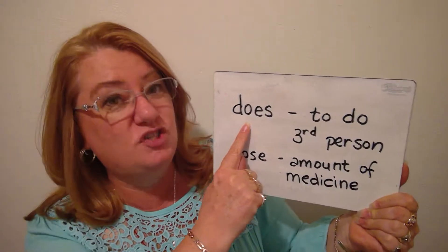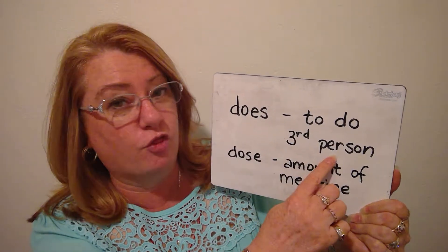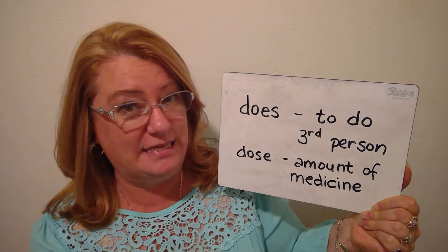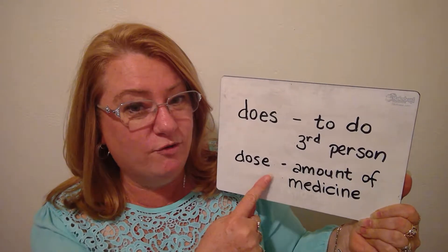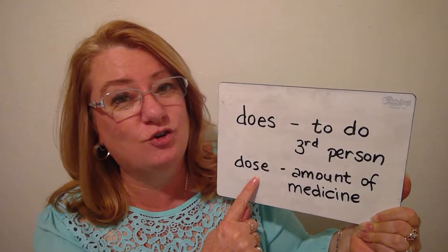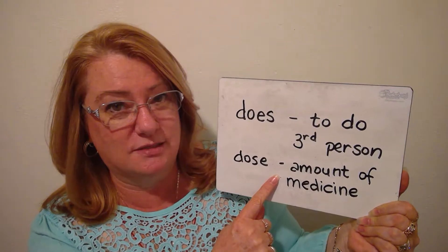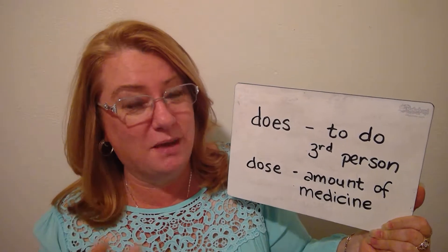There is 'does,' which is from the verb 'to do' in the present tense for the third person — he does, she does, it does. But when you reverse the 's' and the 'e,' you're saying 'dose,' which is an amount of medicine to take — take your dose of medicine. Very different than 'does.'